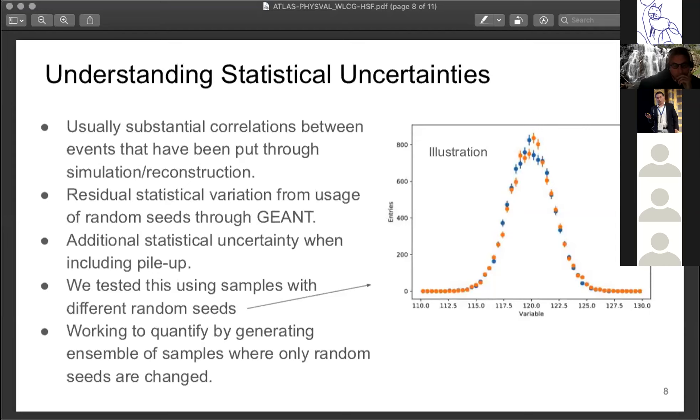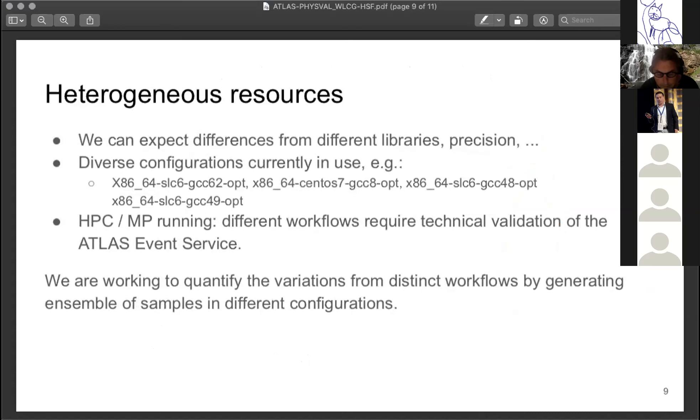Some additional words about statistical uncertainties: there are residual statistical variations from using different seeds throughout full simulation. This also comes up when making changes to simulation by different ordering of particles, and we have additional uncertainty from pile-up overlay. One thing we're starting to do more intensively is to address this by generating samples with different random seeds. Generally, we're working to quantify this effect and other sources of uncertainty by generating samples with different conditions and then factoring out effects by phasing out as much as possible the sources of uncertainty.